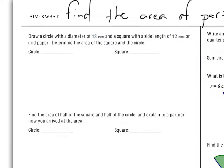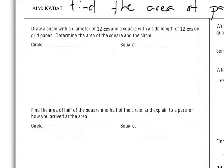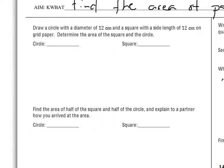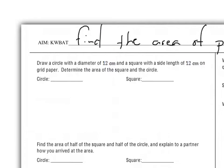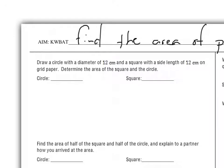It says: draw a circle with a diameter of 12 and a square with a side length of 12 on grid paper. Determine the area of the square and the circle. You've got a grid on the back of your paper, so use that. Go ahead and draw a sketch and find the area of each. Stop the video and work independently with your team.